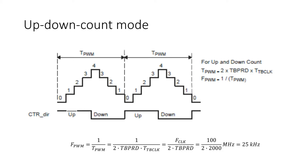In up-down count mode, the time base counter starts from zero and increments until the period value TBPRD is reached. When the period value is reached, the time base counter decrements until it reaches zero, and then it continues again like this.